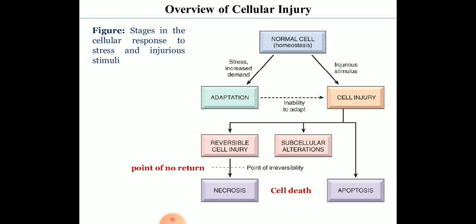This figure explains the overview of cell injury. The cells normally remain in a steady state called homeostasis. Whenever the cell is exposed to stress and increased demand, the cells try to meet that increased demand by undergoing adaptation. But if the limit of adaptive responses are exceeded, or if the cells are exposed to injurious agents, a sequence of events follows that is termed as cell injury.